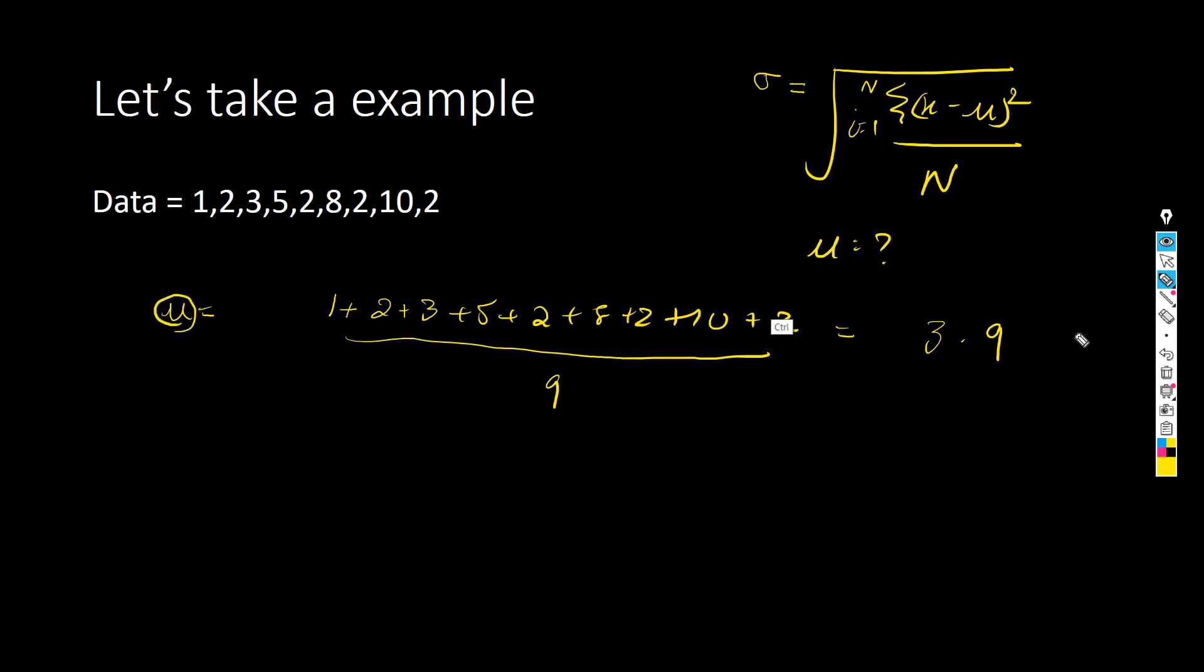Now we can use this mu for our calculation. Let's take it under root. You can see, xi minus mu: our first data point 1 minus mu 3.9 whole square we need to find out, then again 2 minus 3.9 whole square.